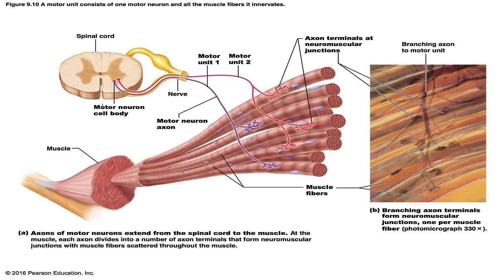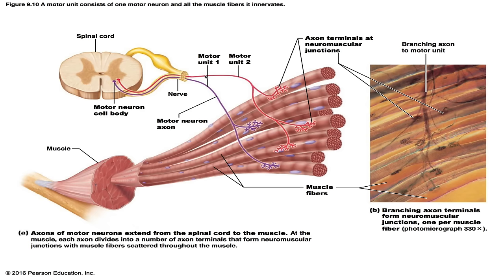Muscle fibers from a motor unit are spread throughout the whole muscle, so stimulation of a single motor unit causes only a weak contraction of an entire muscle, and this is important in preventing fatigue — it's like an on-off switch. In this illustration, we see the axon of motor neurons extending from the spinal cord. You have a couple of motor units, and you can see the muscle fiber and the neuromuscular junction. The axon branches into several axon terminals, and each one stimulates the muscle fibers.